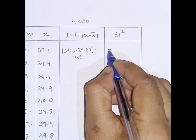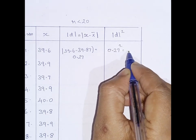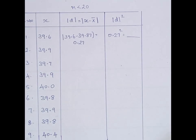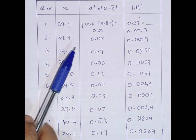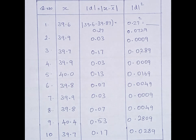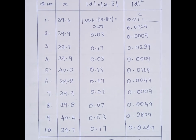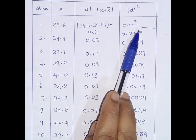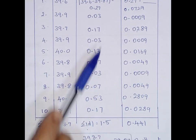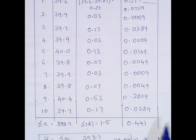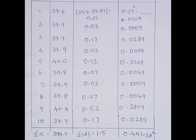I compute 0.27 squared and complete the table like this. I have the modulus of D values for all 10 readings, and similarly D squared — the square of the deviation for each. Adding all the modulus of D values gives summation of modulus of D, and adding all D squared values gives summation of D squared. I now have all values needed for the formulas.